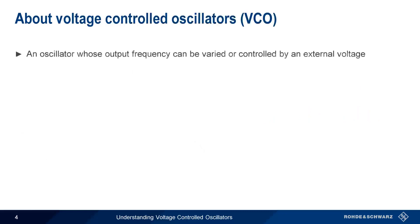A voltage-controlled oscillator is an oscillator whose output frequency is controlled by an external voltage, called the tune or control voltage. In this presentation, we'll refer to this voltage as V-tune. For example,